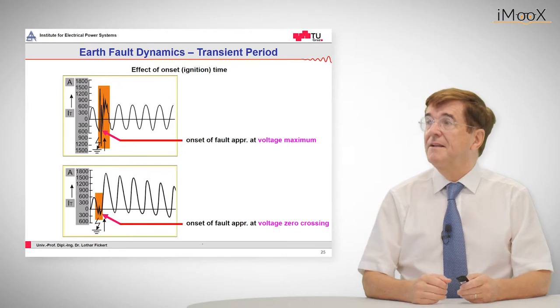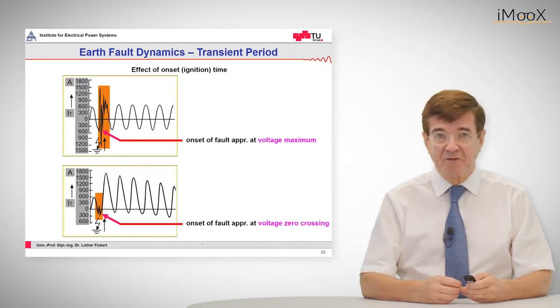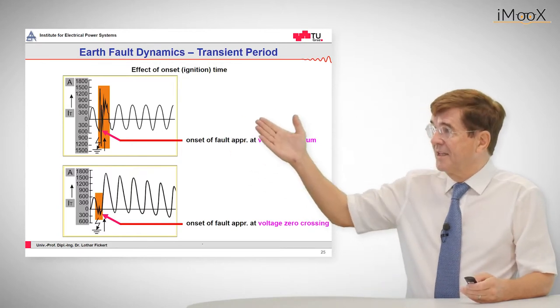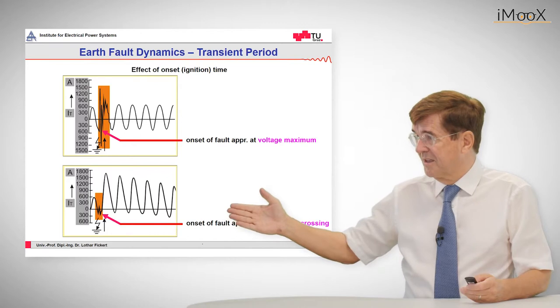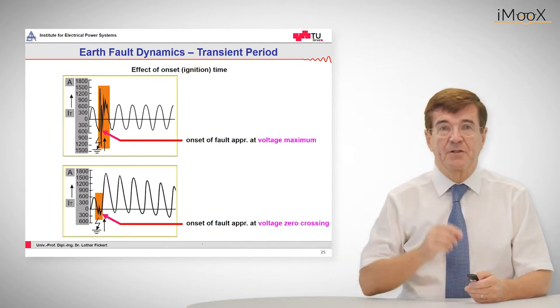And all this current comes together at the fault point. So if there is a heavy onset, which is at the maximum voltage of the faulty phase, then we have a heavy oscillation. And if a fault occurs at more or less zero crossing, this oscillation is there nevertheless, but it is much smaller.